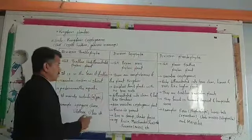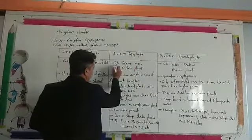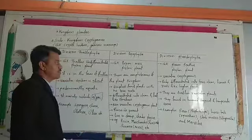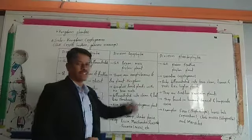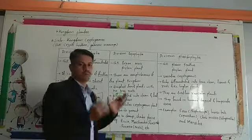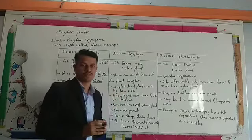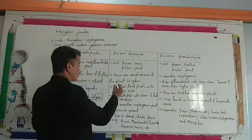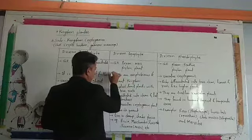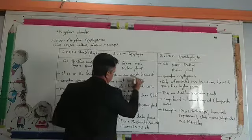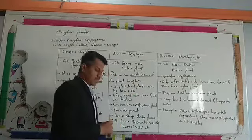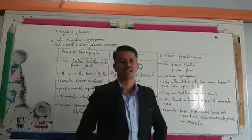Next is Division Bryophyta. Bryon is a Greek word meaning moss, and phyton means plant. So plant bodies are in the form of moss. A very important point: these are called the amphibians of the plant kingdom, meaning they live on land as well as in water.